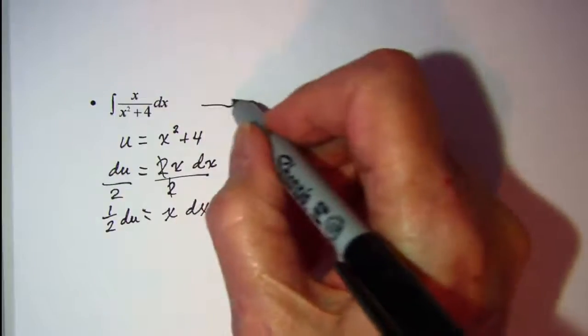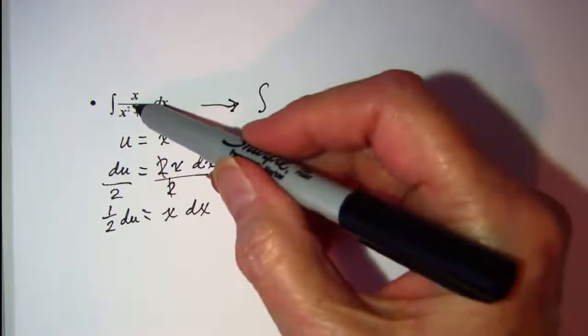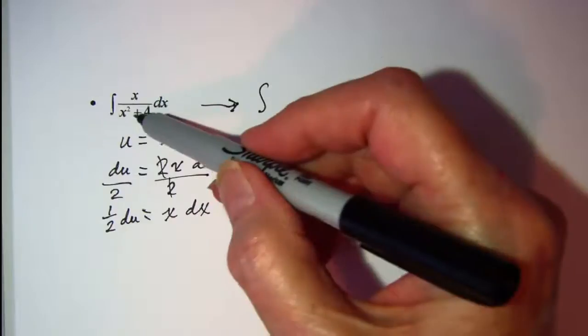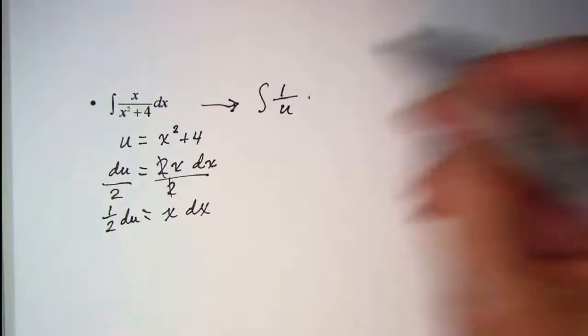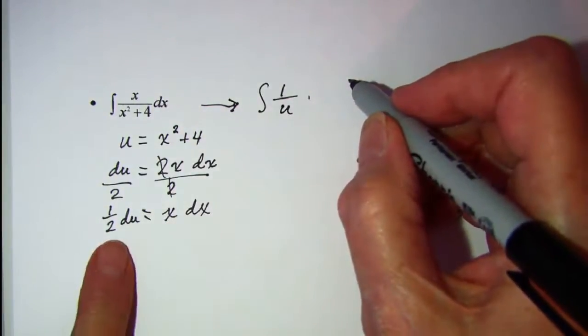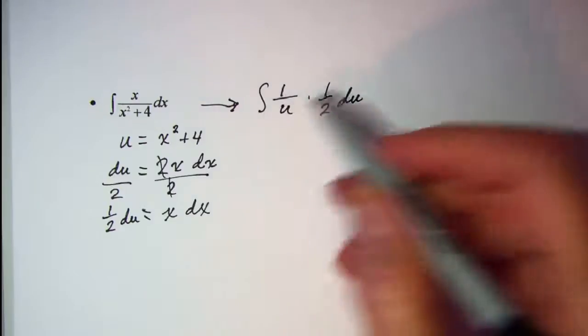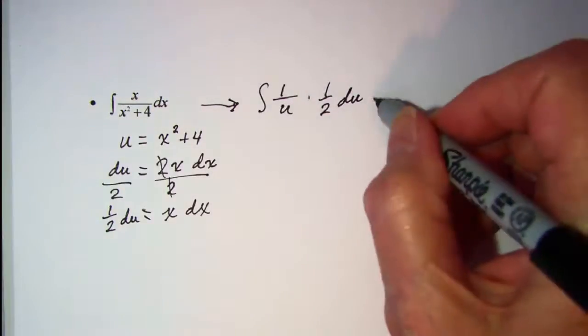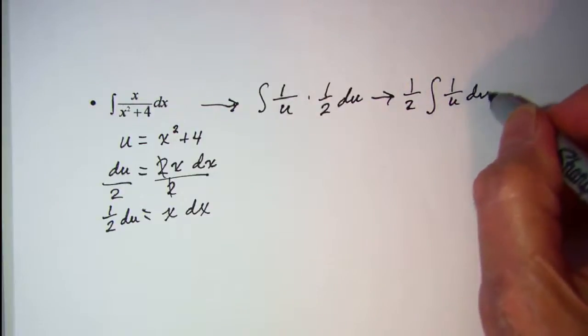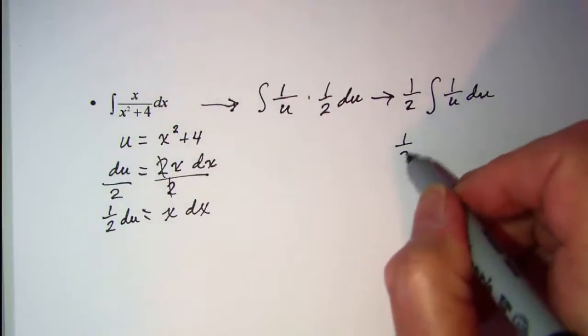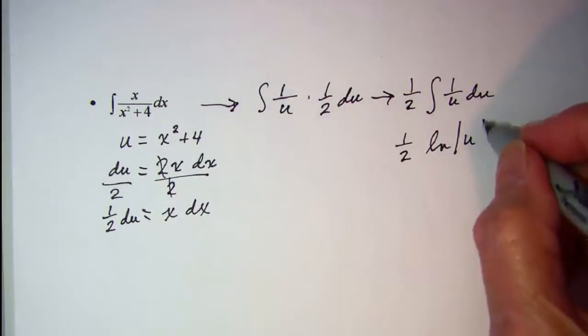So this becomes the integral of, let's separate this, 1 over x squared plus 4, and that will be 1 over u, and then times the x dx, and I'll put in 1 half du. Now the 1 half can come out in front, so this is 1 half times the integral of 1 over u du, which we know is ln absolute value of u plus constant.